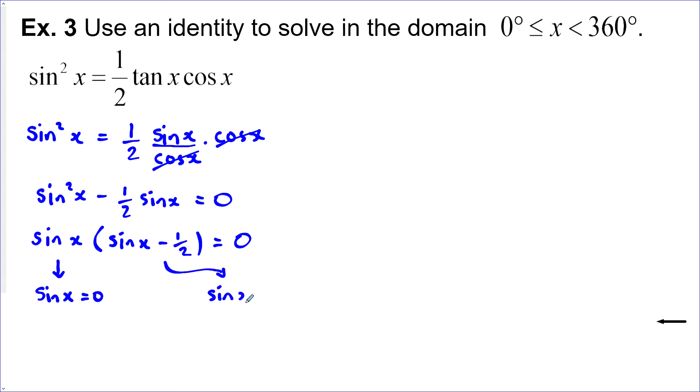For the first one we have x equals zero degrees and 180 degrees and we would have had 360 degrees but that's where our domain cuts off so we can't actually equal it.